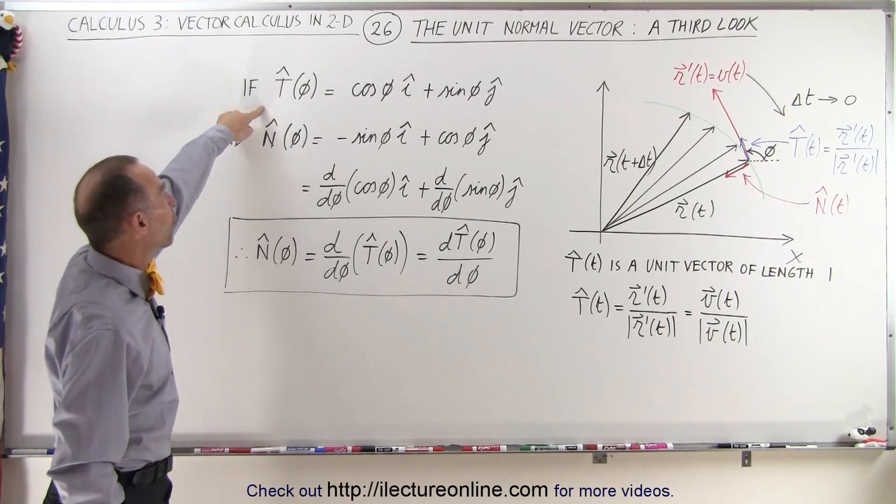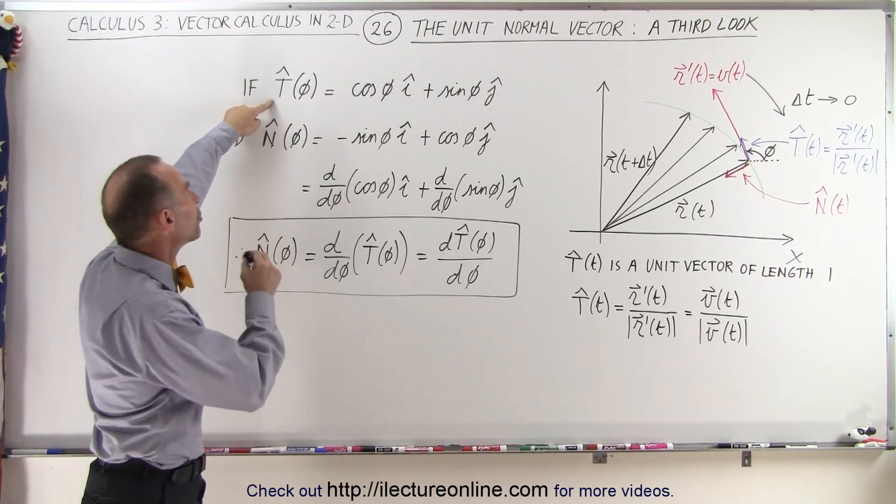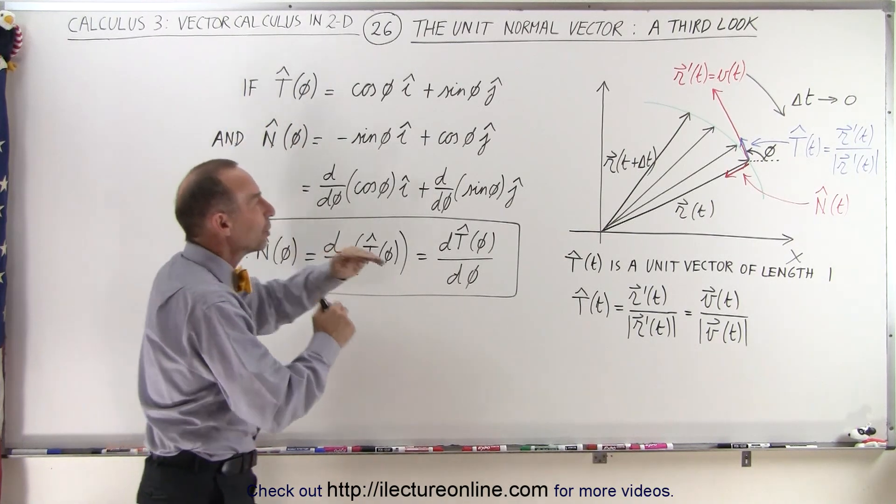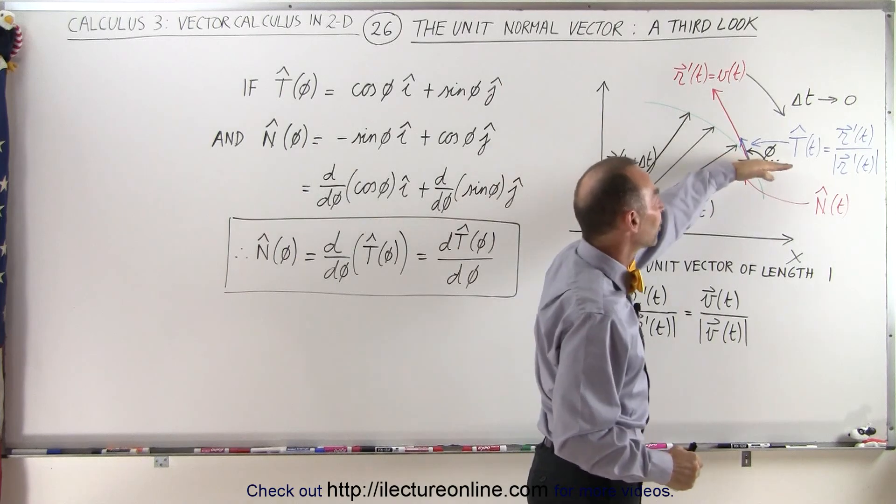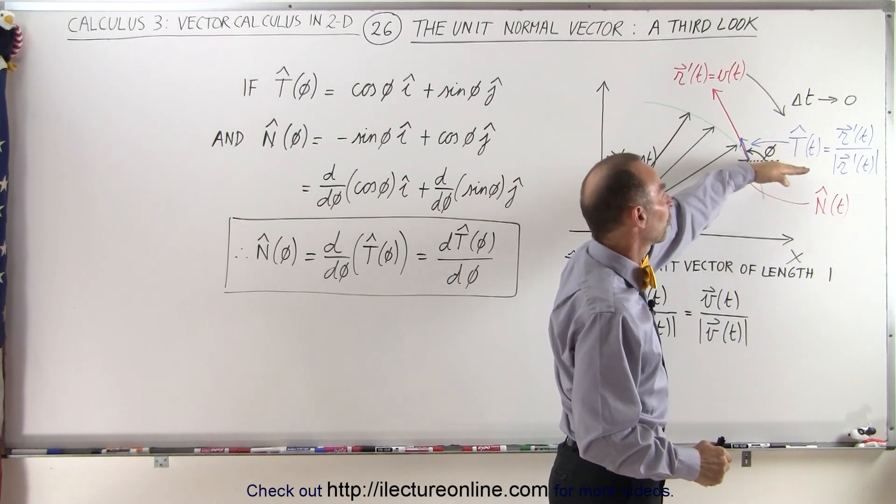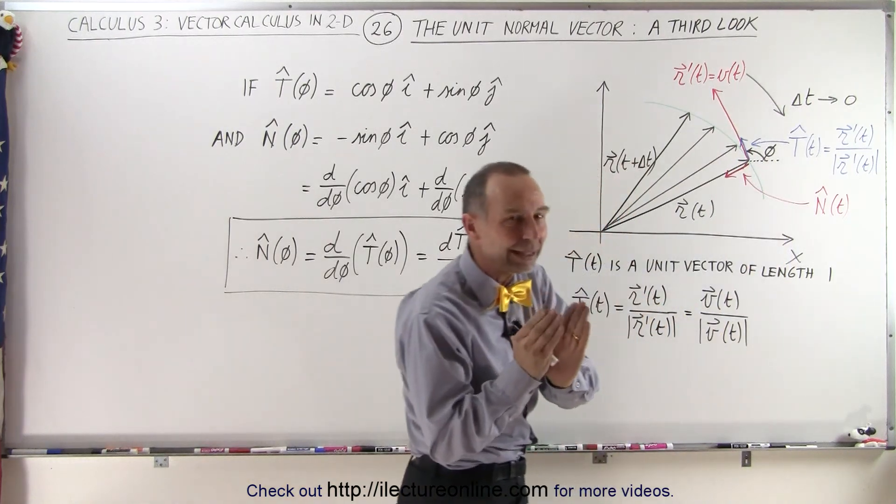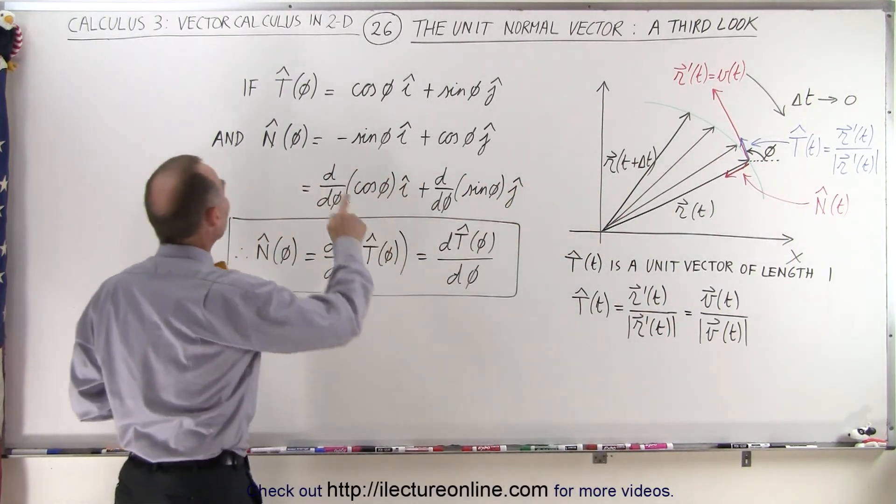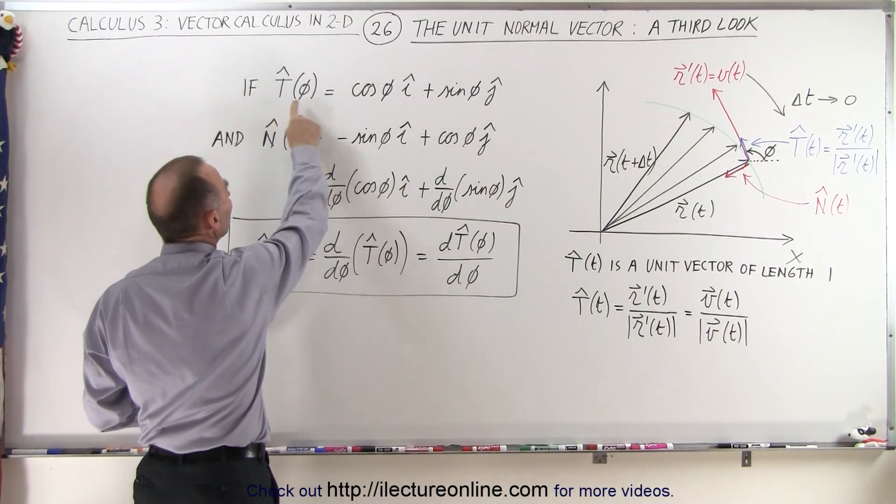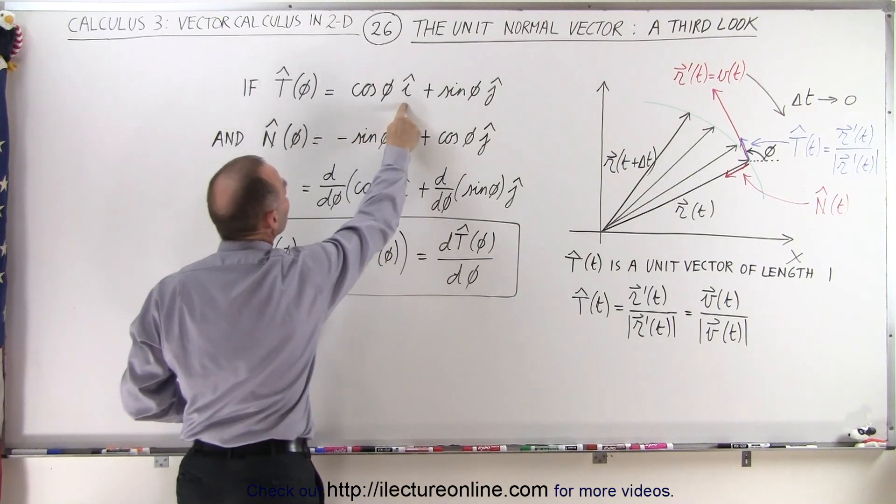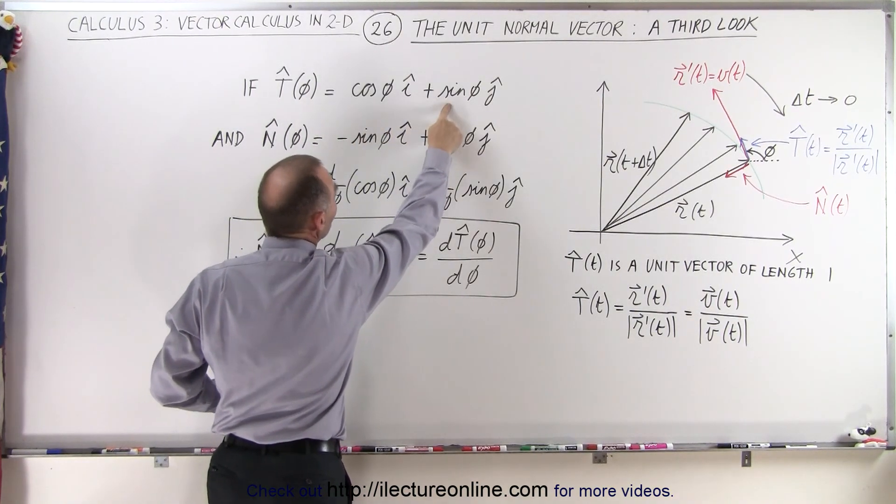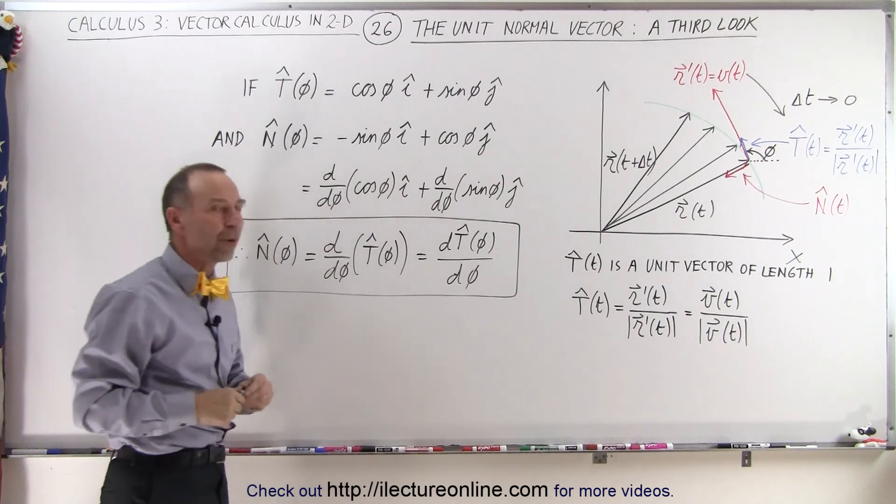Here we have an equation where we define the unit tangent vector in relation to the angle that's referenced to the horizontal x-axis. So the angle between the horizontal x-axis and the direction of the unit tangent vector, if we call that angle phi, then we can define the unit tangent vector by the cosine of phi in the i-direction or the x-direction plus the sine of phi in the y-direction.